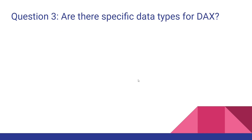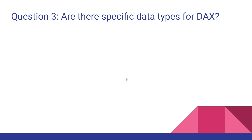Are there specific data types for DAX? This could be an important question. Yes, some data types are supported by DAX — there are seven types: whole number, decimal number, boolean, text, date, currency, and blank.